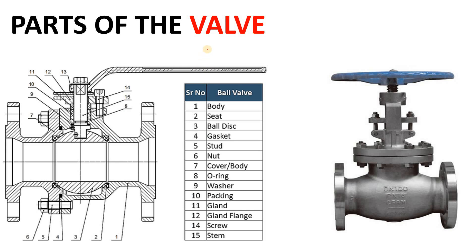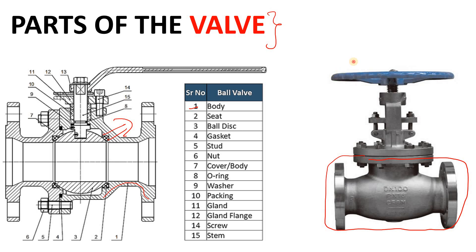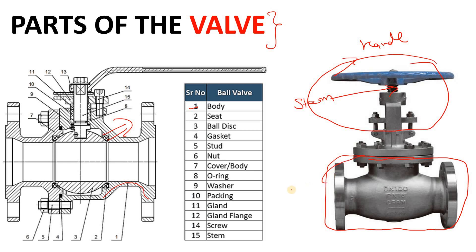Now let's look at the parts of a valve. This is a ball valve — a systematic engineering diagram. The first part is the body. Here in this picture, this is the body. This is the handle. This one is the stem. This is the cover — upper body and lower body — and the body is connected by nuts and bolts.